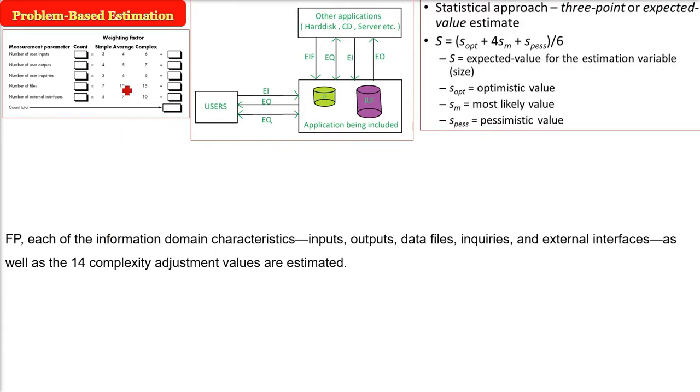In FP, what do we do? We have already seen function point analysis in detail. We have certain parameters, actually five parameters: inputs, outputs, inquiries, files and interfaces. How many numbers are there? We will take them. There is already a matrix, a weighting factor matrix.